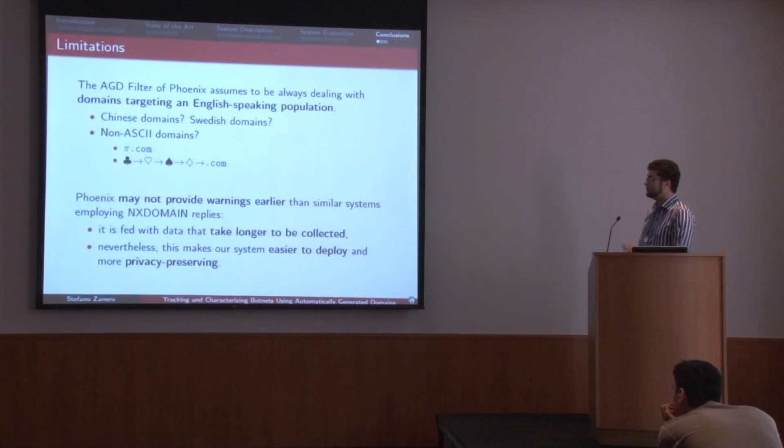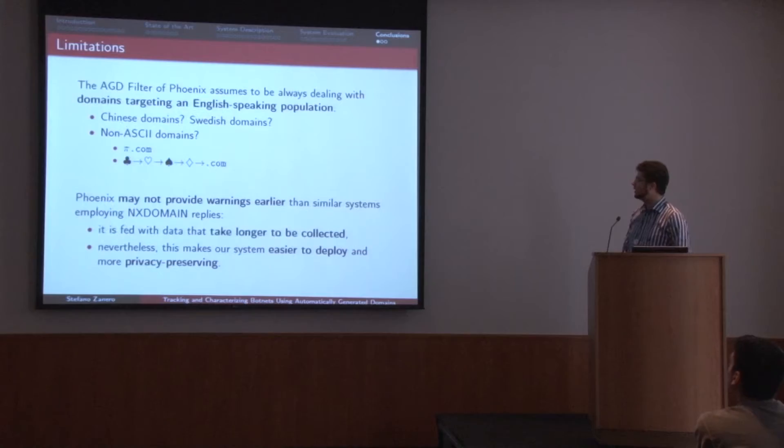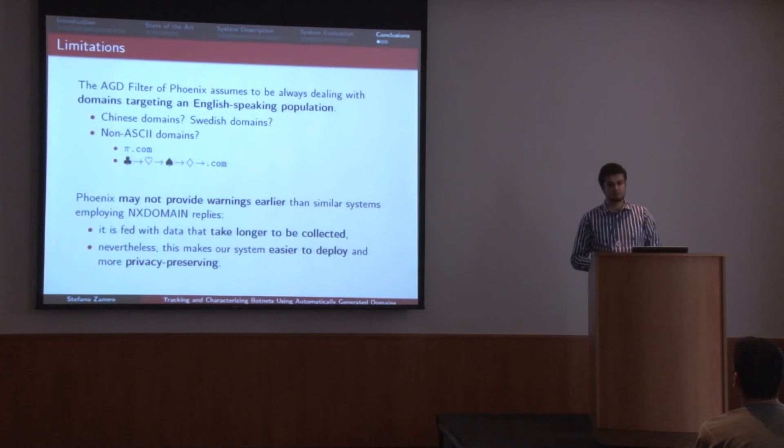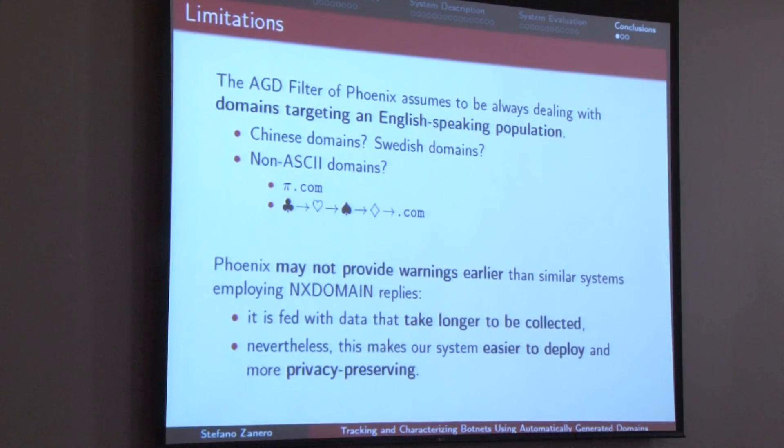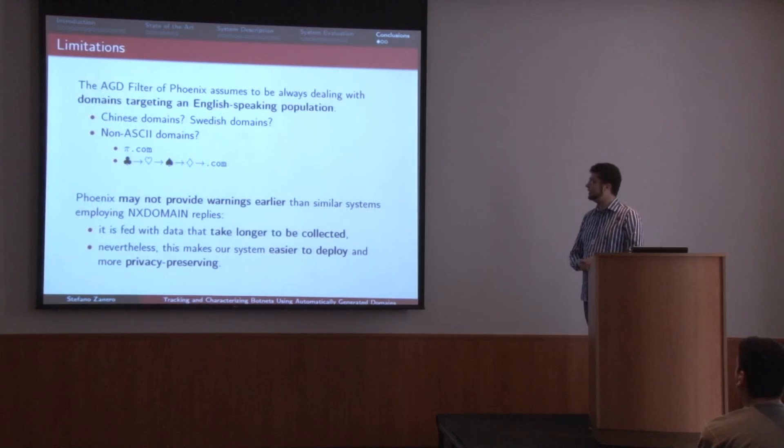We have several limitations. First, we have worked on English — it kind of works for most Latin languages as well, provided that you change the dictionary. But we don't know if it would work for Chinese domains or for non-ASCII domains that you can register right now. The second limitation is that if you are looking for early warning for a network, an approach like the one with NXDOMAIN queries will work faster than this. If you just need to know which machines are infected, NX domains works better. If you want to look at the global population and see the botnets acting and moving, then this is better — it's more of an observation and intelligence tool than an early warning kind of system.